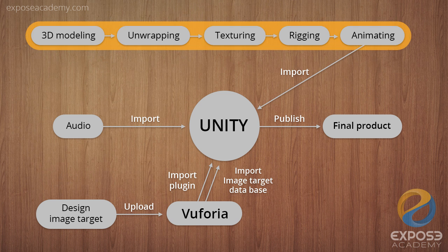As we can see, we need to create the 3D model first, then give it colors in the texturing phase. After that, we add bones to the 3D object in the rigging process, so later in the animation phase we can animate the object. All of these phases are done in 3D software. For this, we'll be using Blender, because that is the software we used to develop our product. And as we mentioned, these 3D development phases are what actually take the longest time.